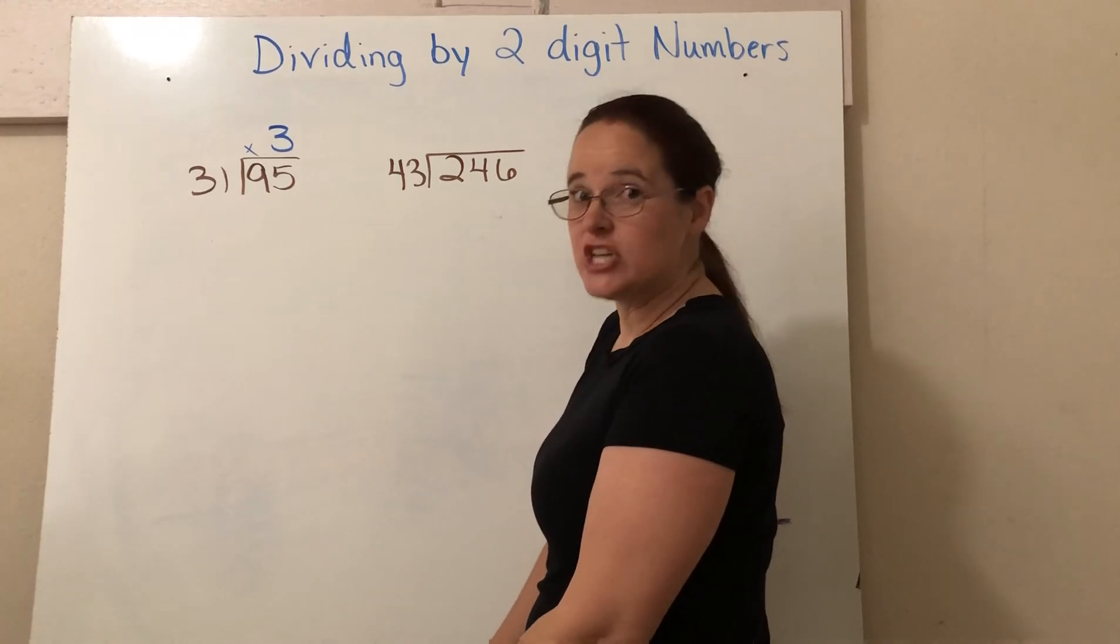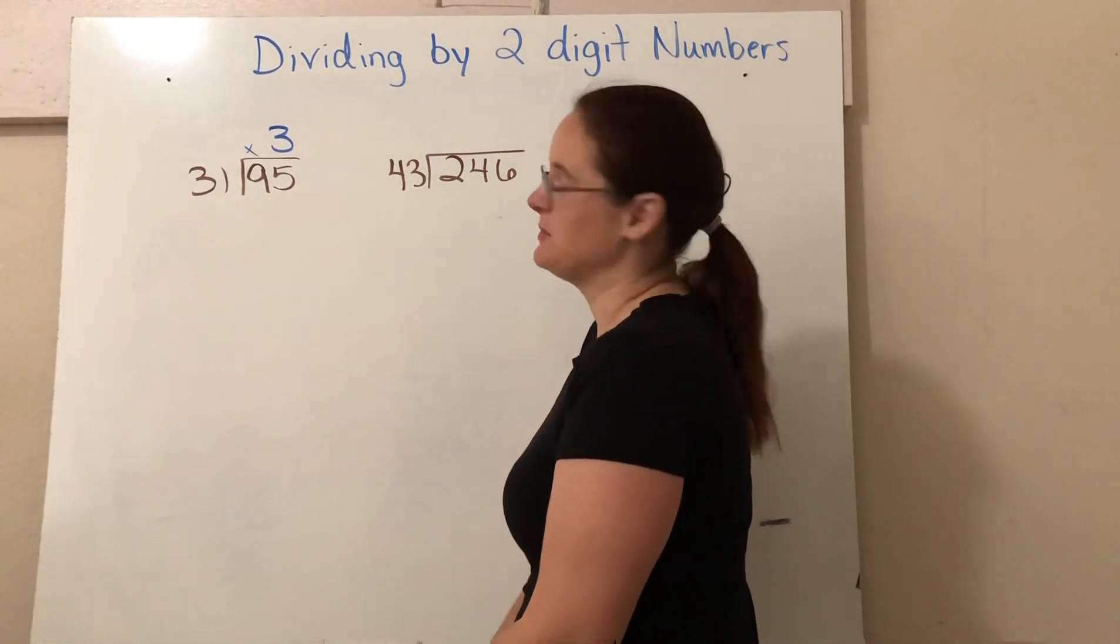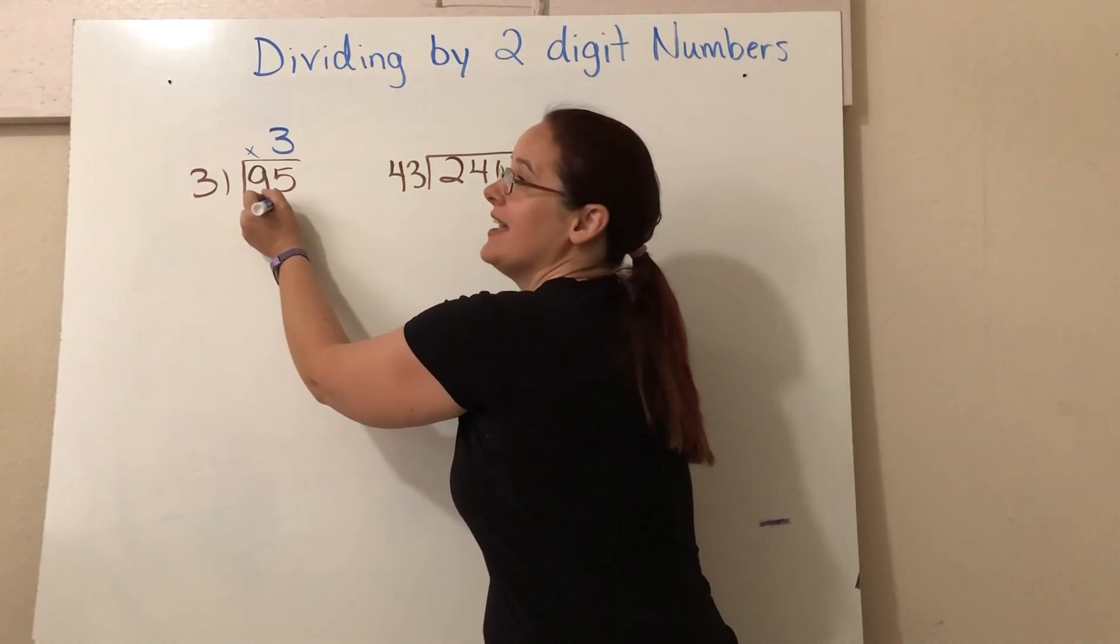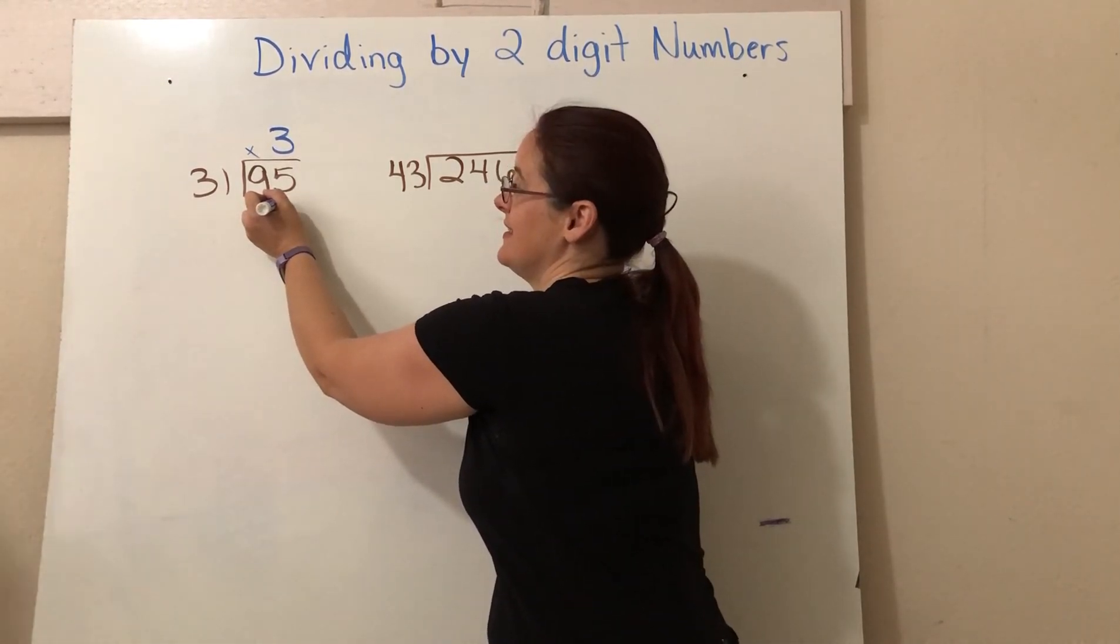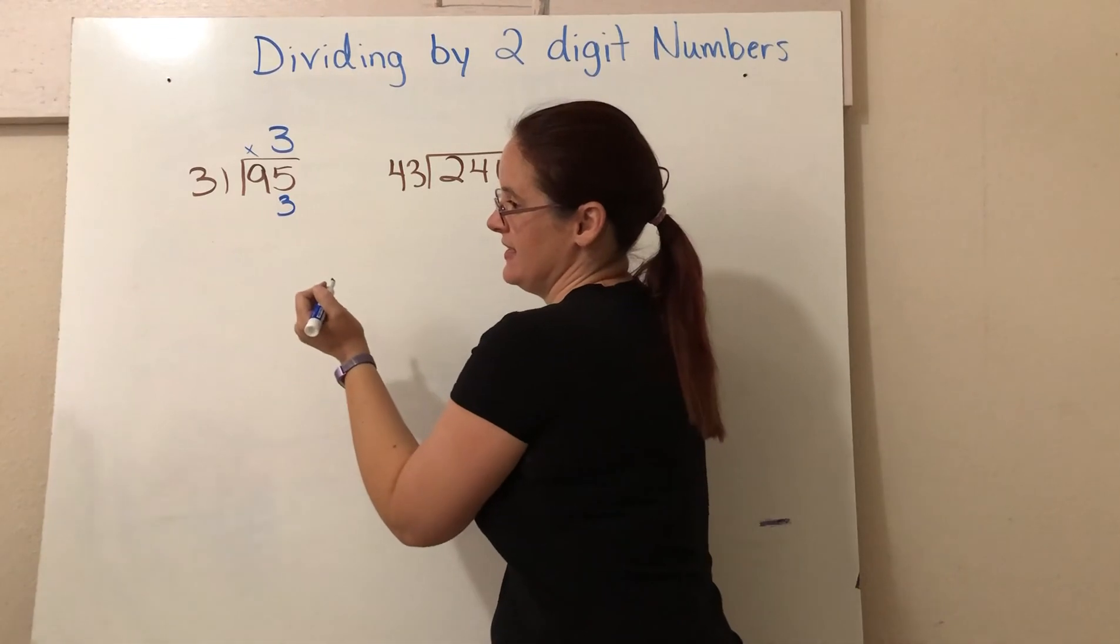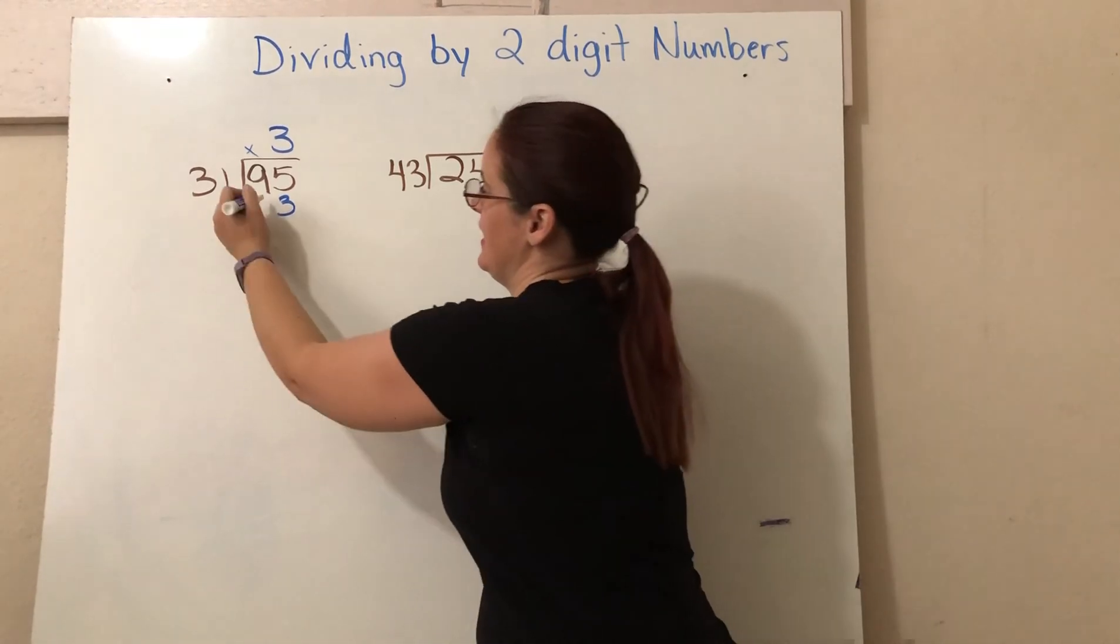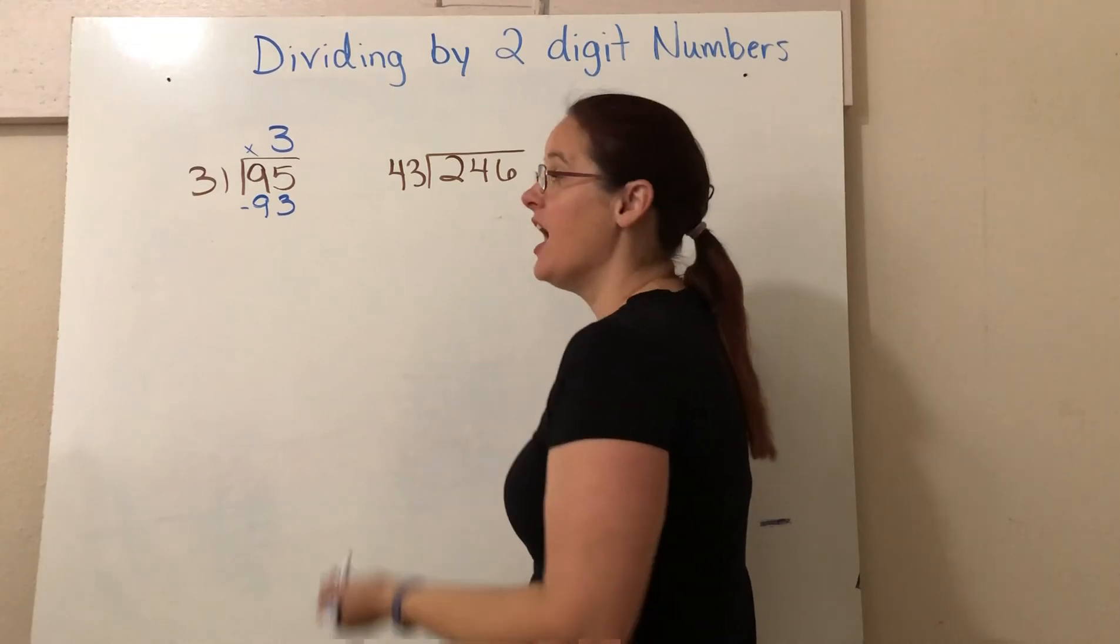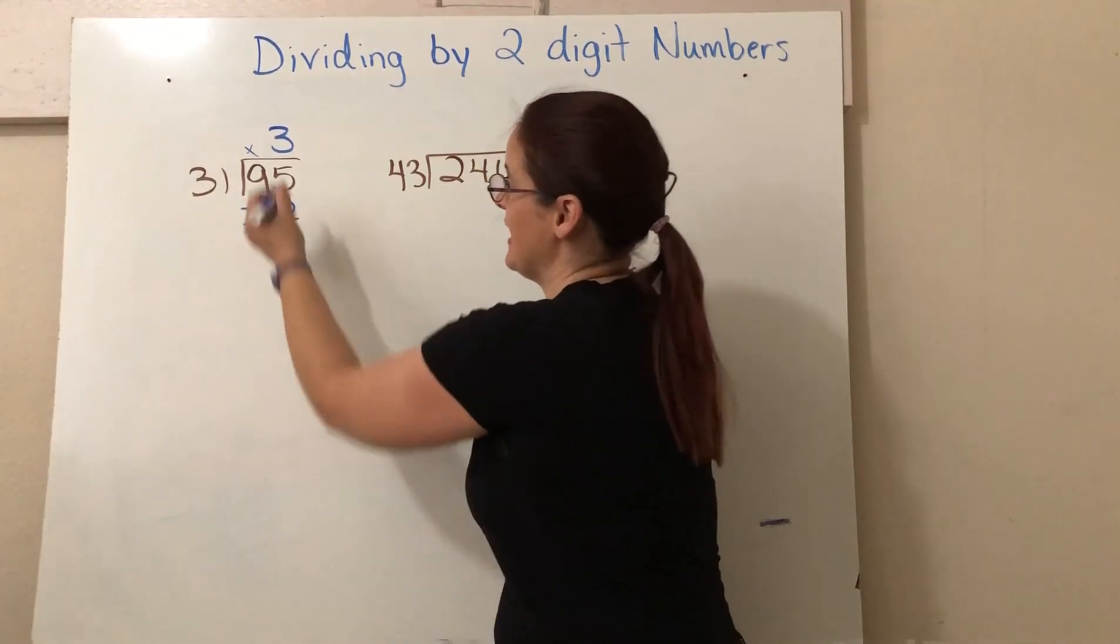So now I get to check my answer by using my multiplication step. Three times one is three. And then three times three is nine. Can I subtract 93 from 95? I sure can. So that was a good guess.